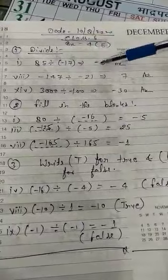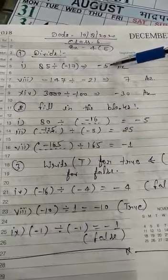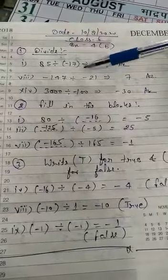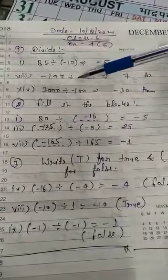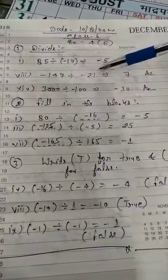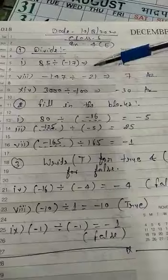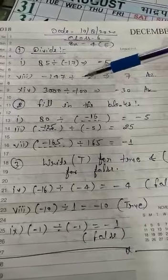Again we have to divide minus 147 by minus 21. Minus 147 ko hame minus 21 se divide karna hai. Minus minus plus ho jayega. 21 se 147 divide karenge, 7 answer ayega is tarike se.